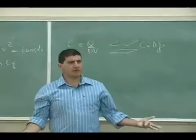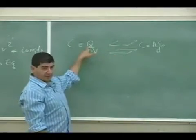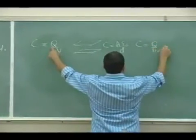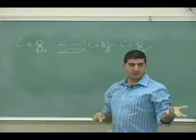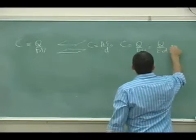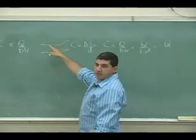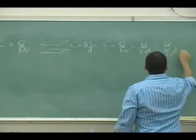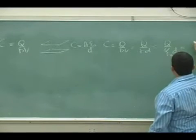How did we get that equation? Well, we started with its definition, and then we said the voltage difference between two plates is equal to its electric field times the thickness between the plates. And then the electric field of the region is equal to sigma over epsilon-zero, and then sigma is Q over A.